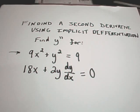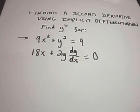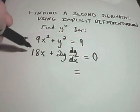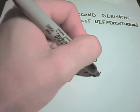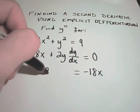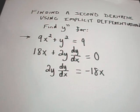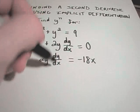So at this point, what you want to do is, like with the other implicit differentiation problems, you'll solve for dy dx. I'm going to subtract 18x from both sides, and I'll have 2y dy dx on the left side.